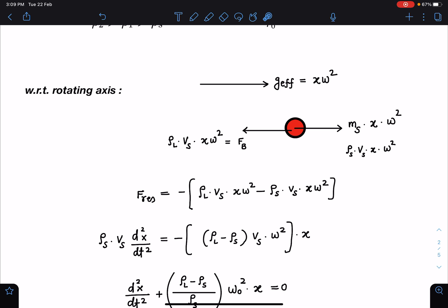If I substitute ms value which is rho s into v s into x omega square, and the buoyancy will act towards the axis and the value is rho liquid into volume of solid into acceleration. Instead of g, x omega square will come, so these are the two forces acting on this sphere with respect to the axis.